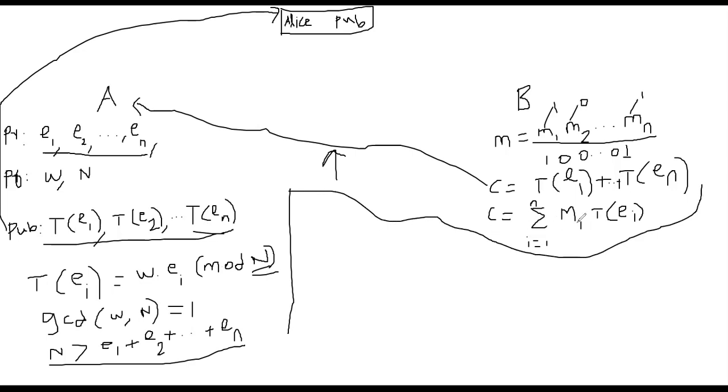So let's see, how can we rewrite this c as follows. Let's rewrite the ciphertext c as a linear combination of 1 to n, mi, ai. I'm going to use the notation ai. What is ai? ai stands for T of ei. That's basically what ai stands for. We can just write it here, ai is nothing but T of ei, trapdoor applied to ei.